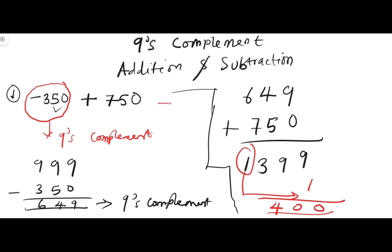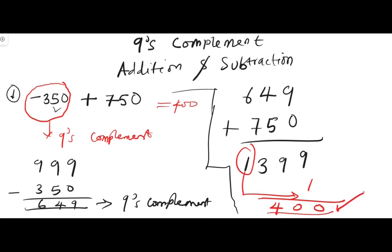So negative 350 plus 750 equals 400 in real life. The answer is positive 400, and our nine's complement calculation confirms this — the answer is correct.